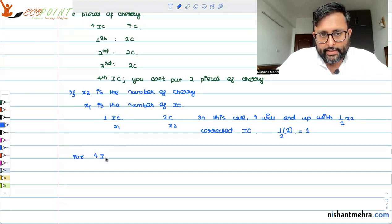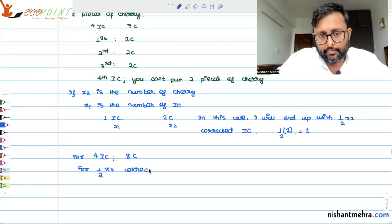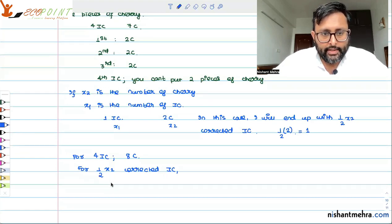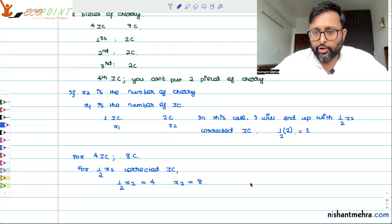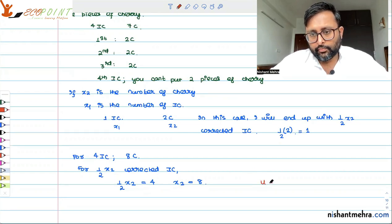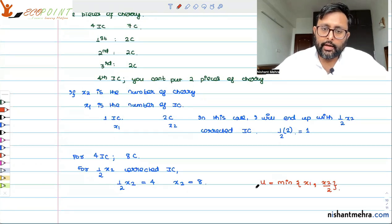For four ice creams, I need eight pieces of cherry. So how will I write this? For half x2 corrected ice cream, I need four ice creams — how many x2's should I have? Eight. So the utility function in this case is min of x1 comma x2 by 2.